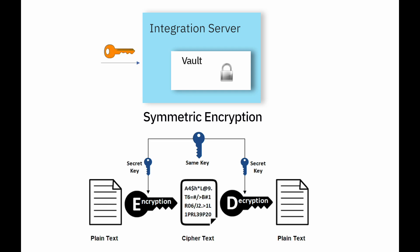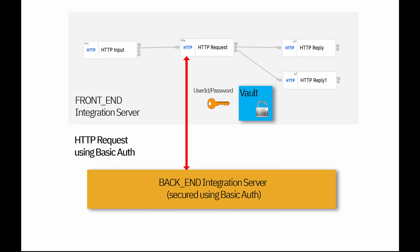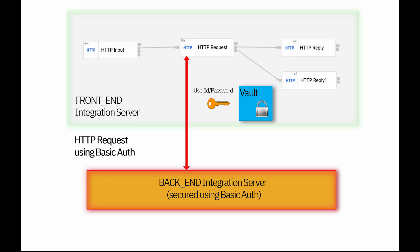For this demonstration, I'm going to use a private integration server vault for storing an HTTP credential. I'm going to use two integration servers: one called 'backend' and the other called 'frontend'. The backend integration server will act as a backend web service secured using BASIC-AUTH.